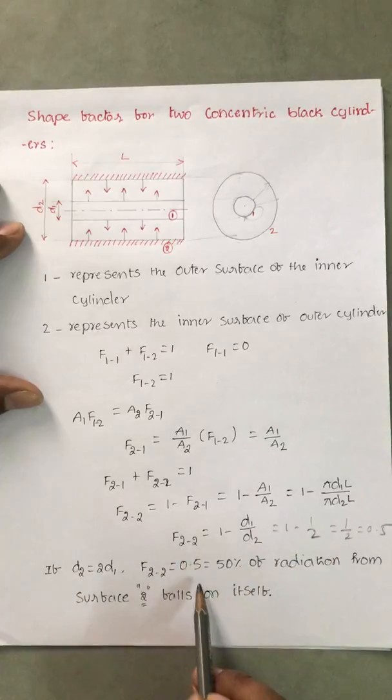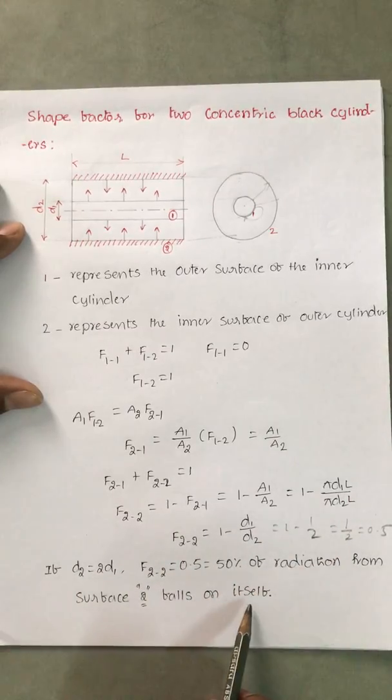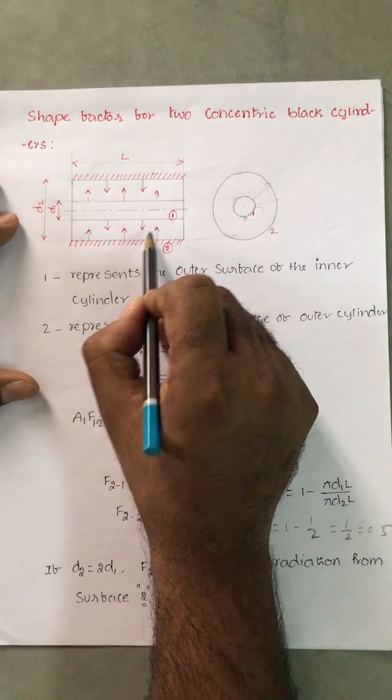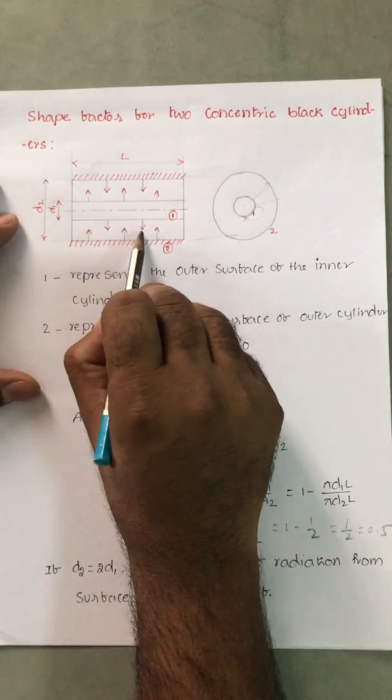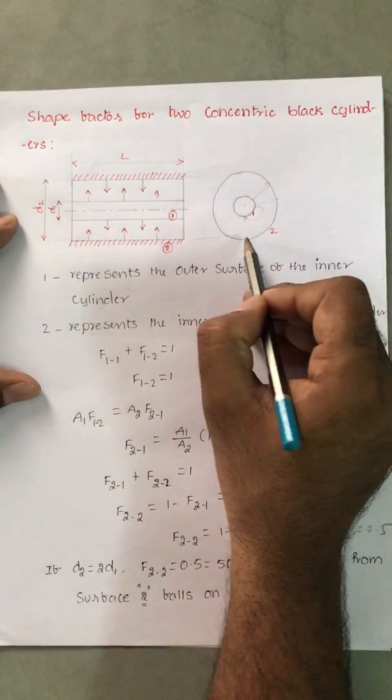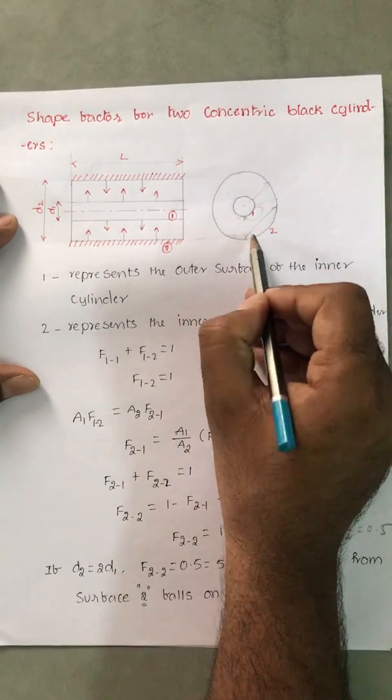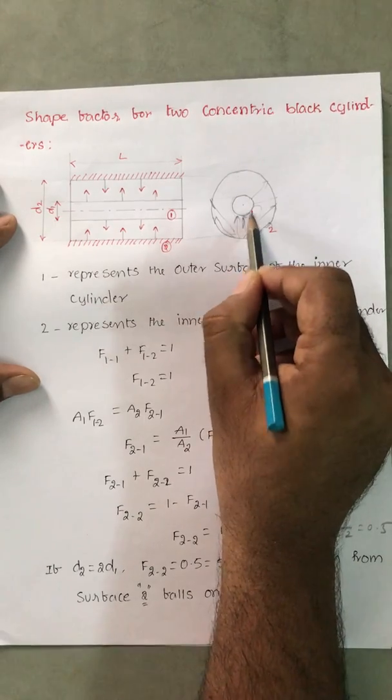F₂₂ is 0.5, that is 50%. So 50% of radiation from surface 2 falls on itself. That means 50% of the total radiation which is emitted from surface 2 will strike the same surface itself. You may get confused here. That's why I have drawn here. So if you see exactly, 50% means it may go like this also. So only 50% of the energy is striking cylinder 1.